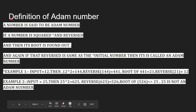You take a number and you have to square that number. After squaring the number, you reverse the number. Then for this reverse number, you find the square root. If the reverse number is the same as the initial number, then that number is called an Adam number.